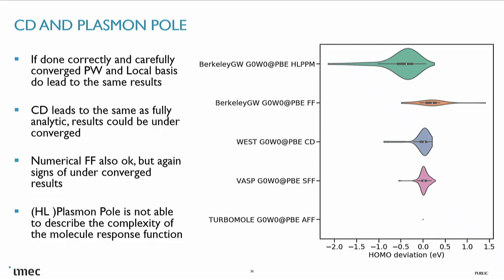Once we have basis sets under control, we can start comparing different ways of doing GW. Here we compare the Hubbard-Sham plasmon-pole model, numerical full-frequency integration on the real axis — which is extremely expensive and not so good — and the extrapolated plane-wave results. The reason one result is shifted to the right is that it's not basis-set extrapolated. The main conclusion here is that a plasmon-pole model for something with a complicated dielectric function like a molecule is not a very good approach.